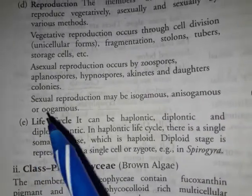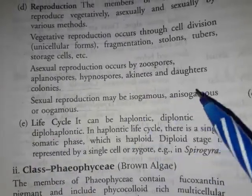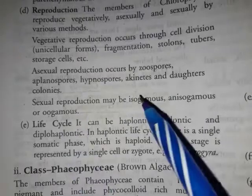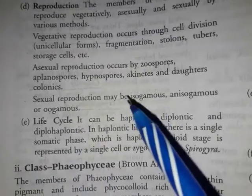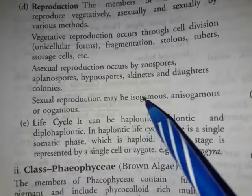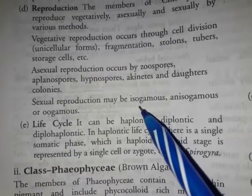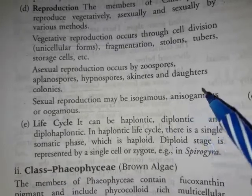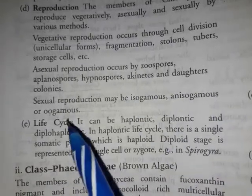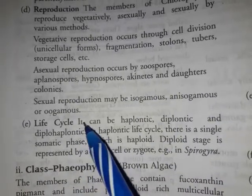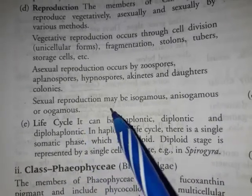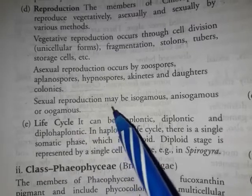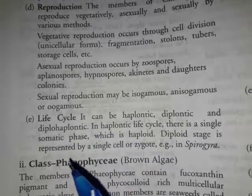Now let's talk about sexual reproduction. This can be isogamy, anisogamy, or oogamy. Isogamy means the gametes are similar. In anisogamy, one gamete is very large — the female gamete — and the other is small.